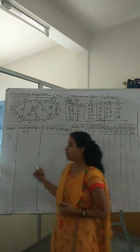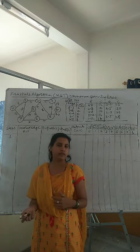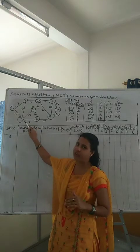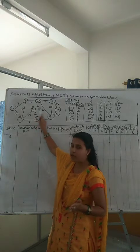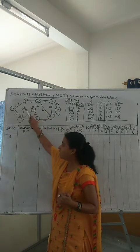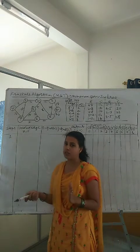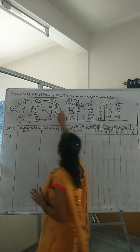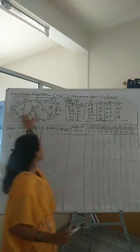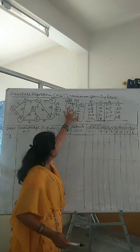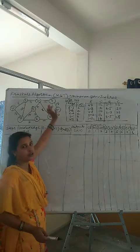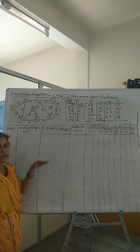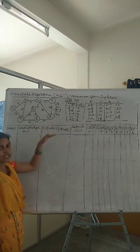Now we are going to see the tabular method of Kruskal's algorithm. In an exam, when asked, you should always use the tabular method for calculation. For the same graph we considered, I have prepared a list of all edges with their costs in ascending order of cost, starting from cost 2 up to the maximum cost of 28. This list gives us the sequence of edges we will process one by one.